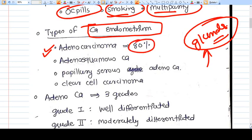Some mixture of adenosquamous carcinoma is there. There are some types of papillary carcinoma and clear cell carcinoma also. These are not having good prognosis, so these are less common but they are more dangerous.